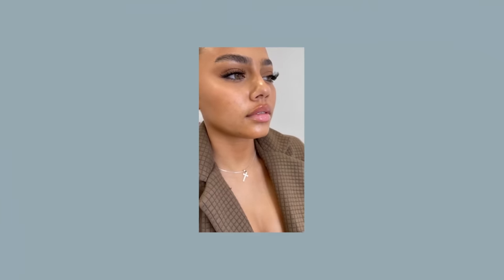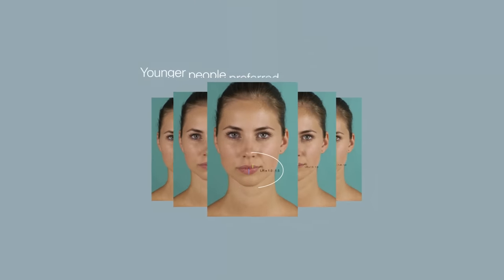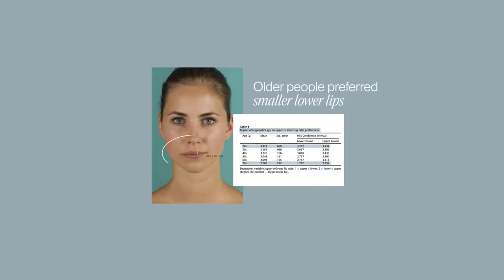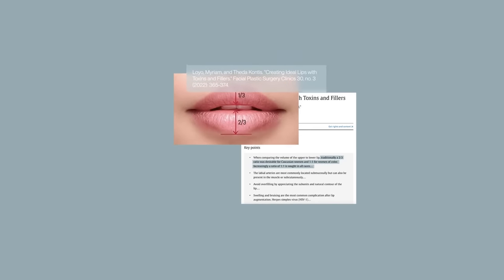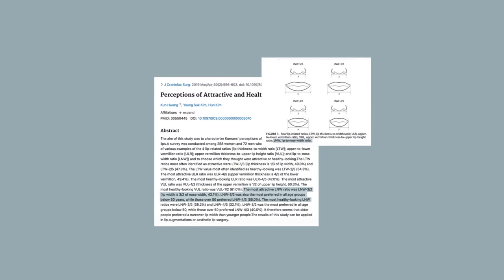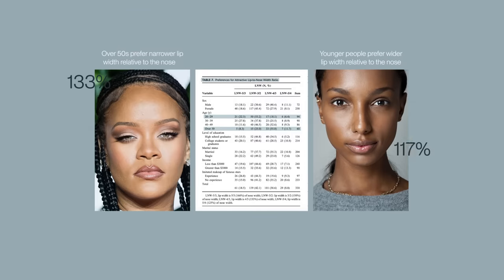A greater emphasis on bigger lips is one of the most obvious departures from the classical era. Scientists have even tracked this changing beauty standard by comparing the preferences of younger people with older demographics who would have remembered Lynda Carter as Wonder Woman from their youth. If you prefer larger lower lips, your preferences align with younger people especially those in their 20s, while those in their 70s in this study identified the smallest lower lips as ideal. Changes in lip ratio preference are moving to match the long-held ideal 1-to-1 ratio for women of colour, and as noted by Contis et al., traditionally a 2-to-3 upper-to-lower ratio was desirable for Caucasian women, while now an increasing ratio of 1-to-1 is sought after across all races. Research also found that those over 50 prefer a narrower lip width relative to the nose, compared to younger people favouring a lip width of 150% of the nose width.